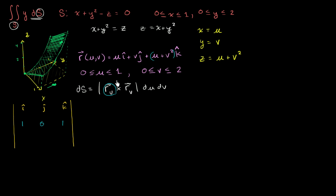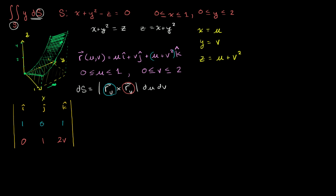And then r sub v — the partial of r with respect to v — the i component is going to be 0, the j component is going to be 1, and the partial of (u + v²) with respect to v is going to be 2v. So it's a pretty straightforward determinant.